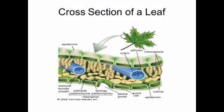Now let's see the transverse section of a leaf. The leaf is the place where photosynthesis takes place in green plants. This shows mesophyll cells, which contain chloroplasts. Chloroplasts are cell organelles that have chlorophyll pigments which trap solar energy. The leaf section also shows small pores at the lower epidermis called stomata, which allow carbon dioxide to enter the mesophyll cells.